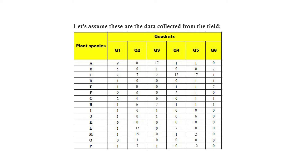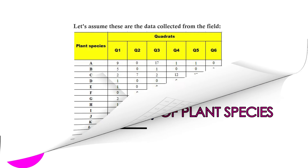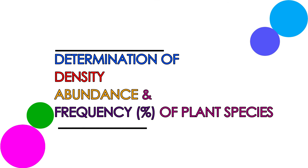It is when you have this data that we will be able to quantify the plant community quantitative characteristics. That is done by determining the density, abundance, and frequency percentage of the plant species present within the habitat of interest. Through this data, comprehensive information about the herb population throughout the quadrat sample in the habitat of interest will be obtained.